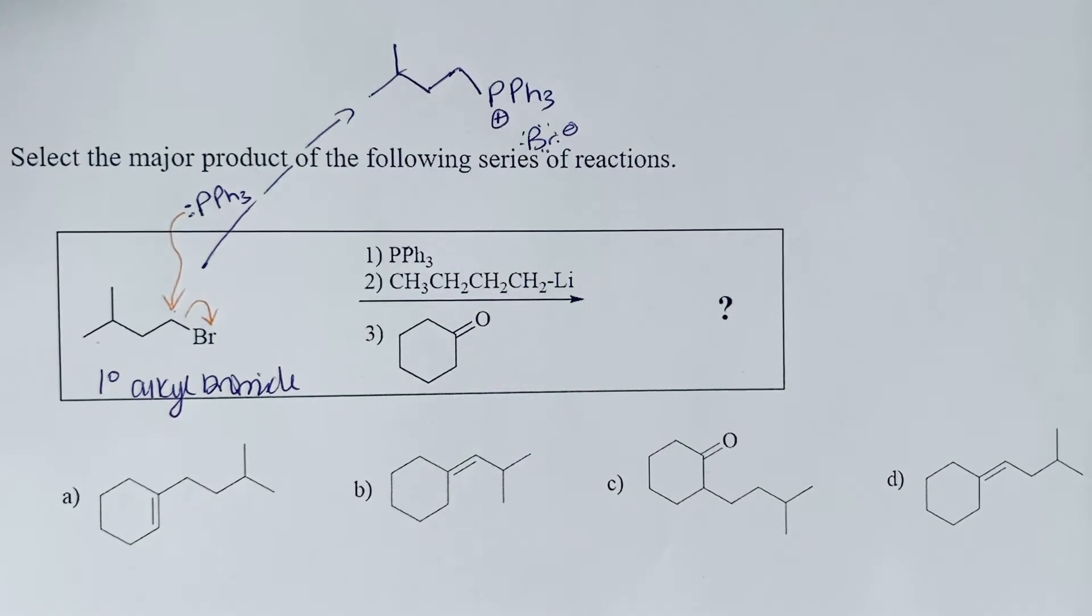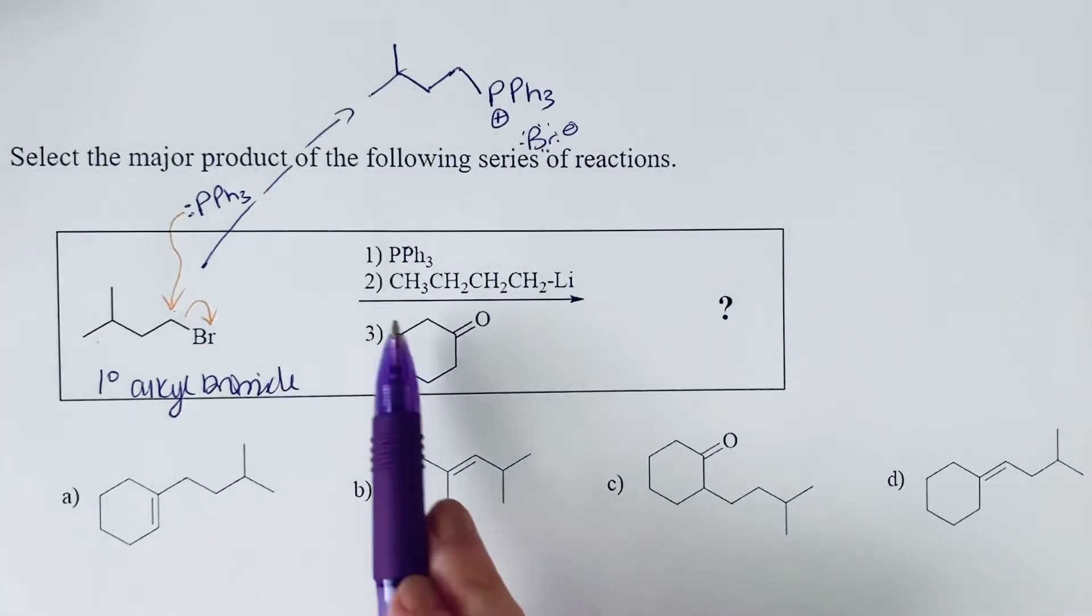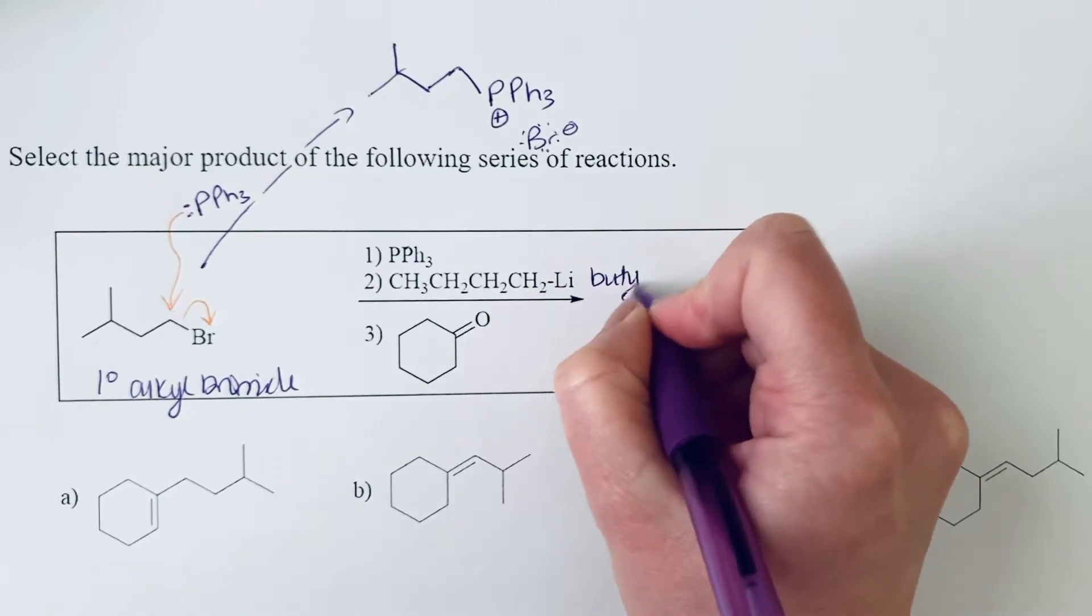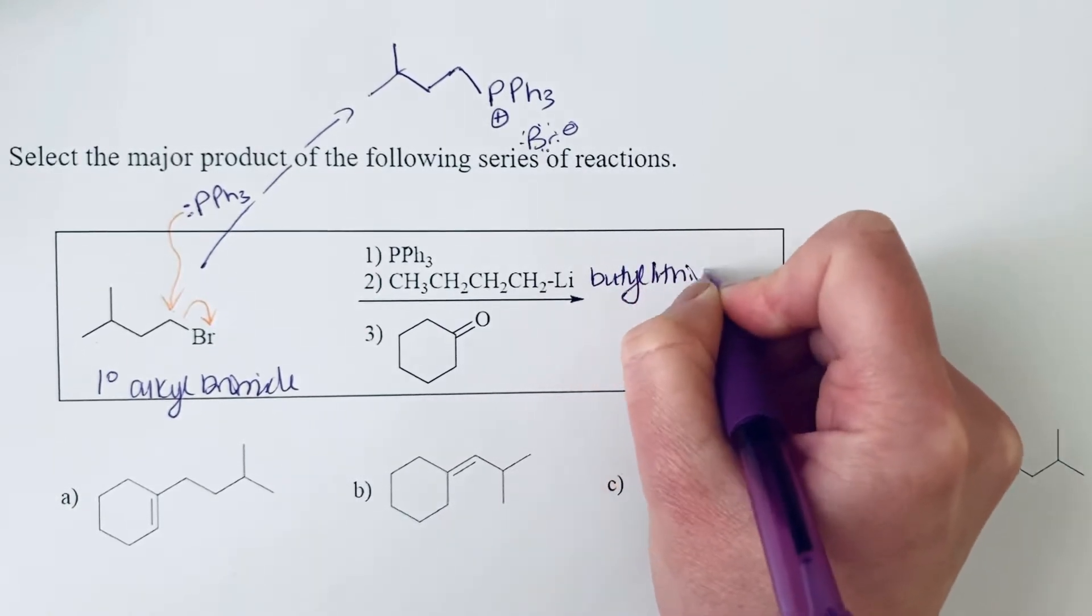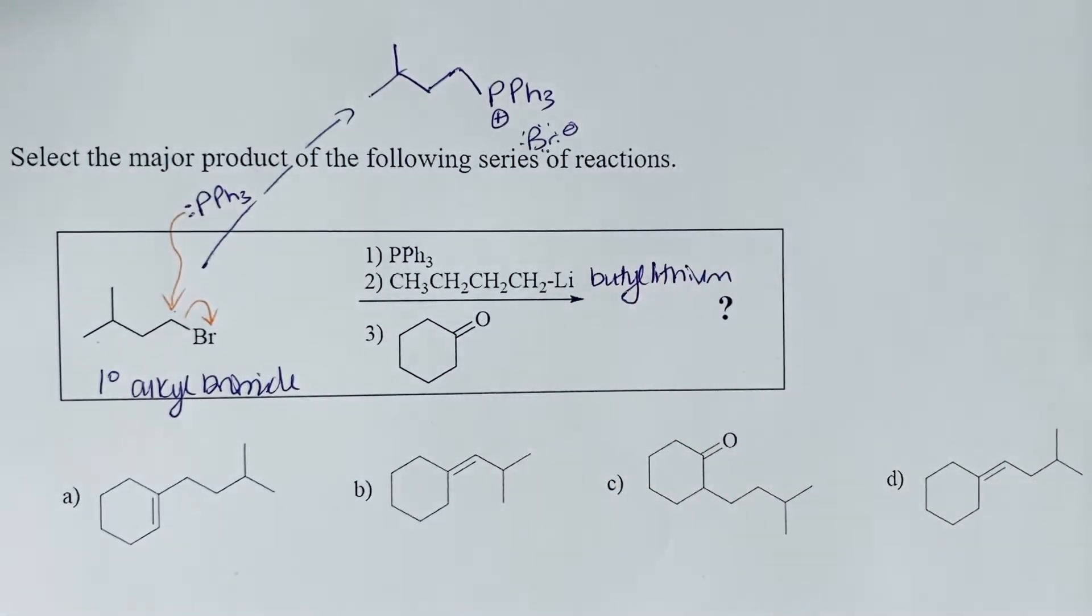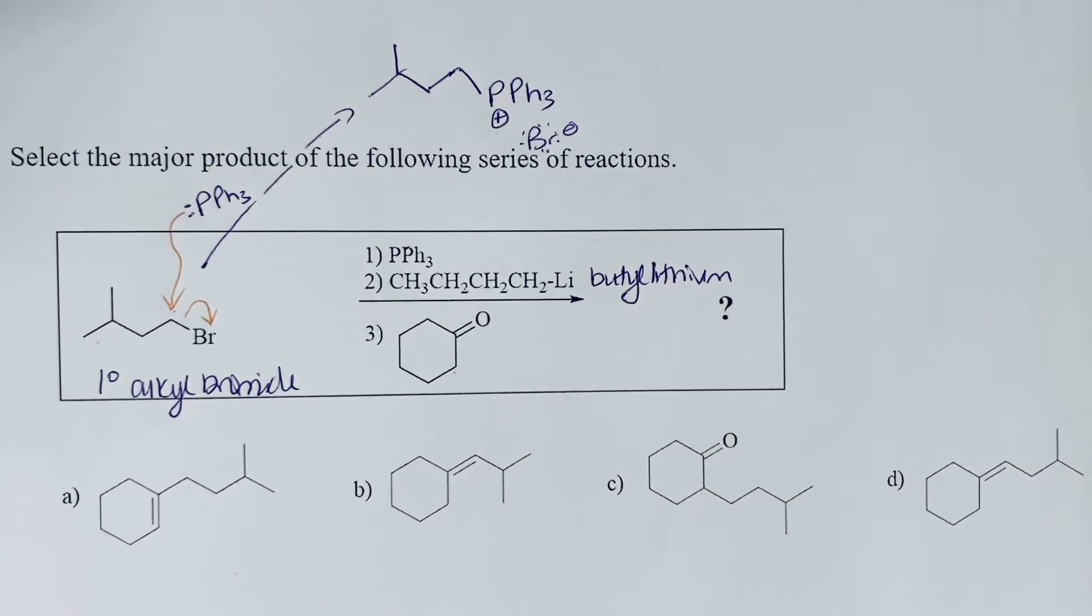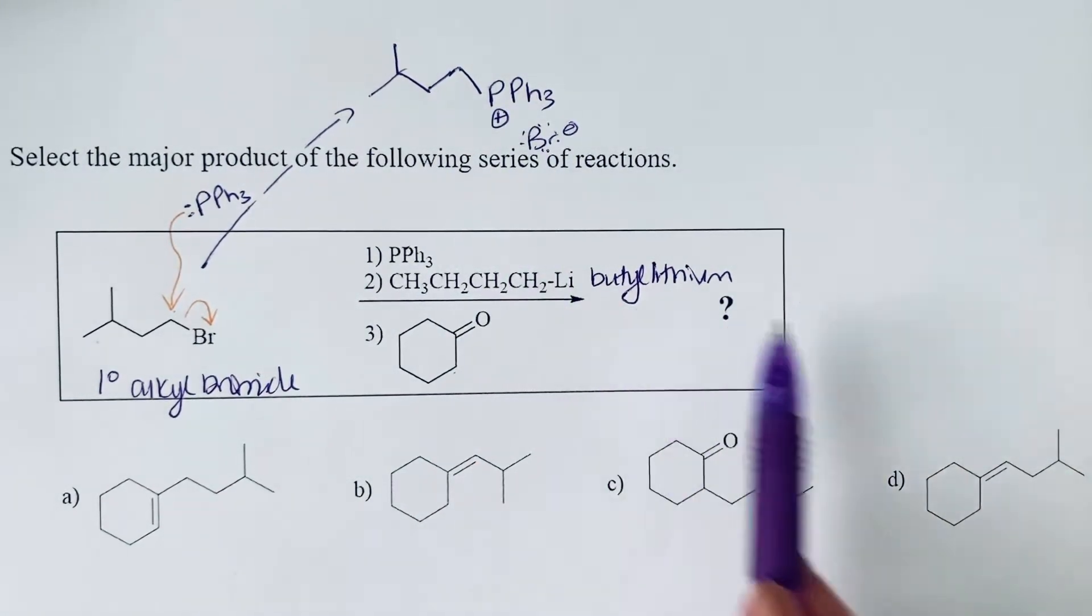In the next step we're treating this with butyl lithium. Butyl lithium does react similar to a Grignard reagent. If you had a carbonyl, it might attack the carbonyl. It's also a really strong base, and that's what it's being used for in this case.